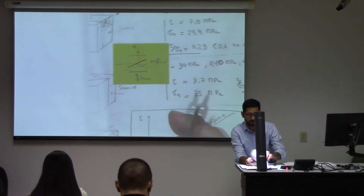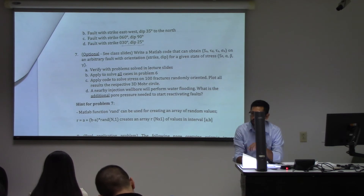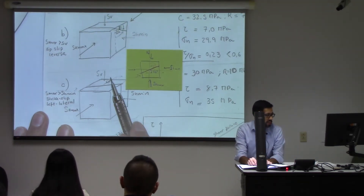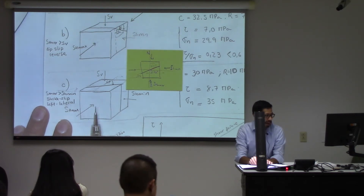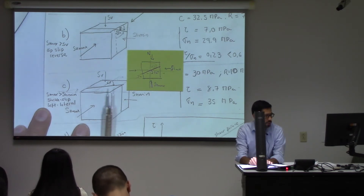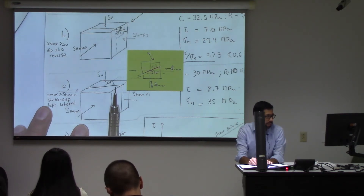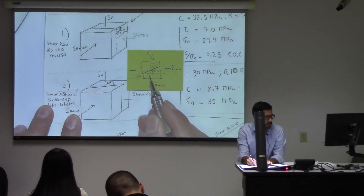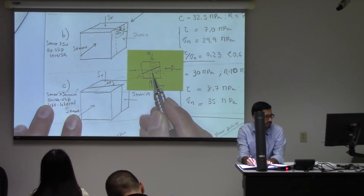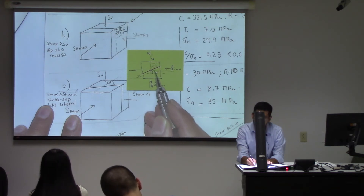The last case, C: it's a fault with a strike of 60 degrees, but notice that the dip is 90 degrees — so this is going to be a vertical plane. The stresses that make these blocks move are SH max and SH min; SV is not going to make these two blocks move with frictionless interfaces. The maximum principal stress is SH max, and the minimum is SH min.